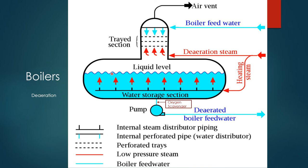This is the steam distributor piping, and this indicates the trays. The steam line and boiler feed water are maintained here. This is a pressure-type deaeration; another type is vacuum-type deaeration, in which the boiling temperature is lower. Mostly the pressure-type deaeration is used, as it heats incoming boiler feed water to around 106 to 108 degrees centigrade, which improves fuel efficiency.